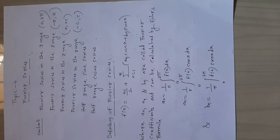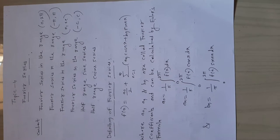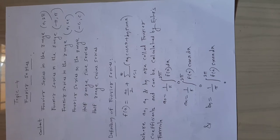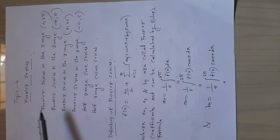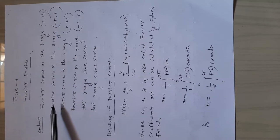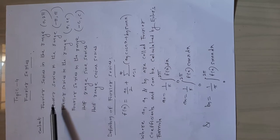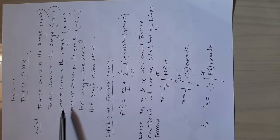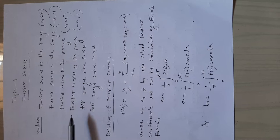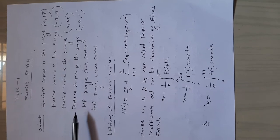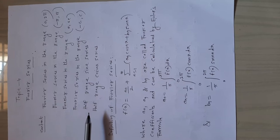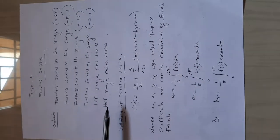Today we are going to discuss the topic Fourier series. This topic contains mainly 6 points: Fourier series in the range 0 to 2π, Fourier series in the range -π to π, Fourier series in the range 0 to 2c, Fourier series in the range -c to +c, half range sine series, and half range cosine series.